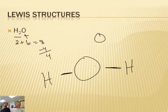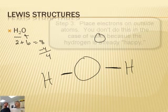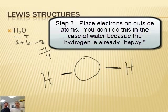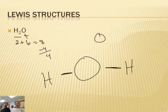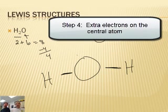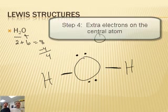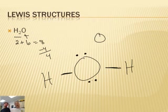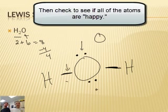Is the hydrogen happy? It is. It only wants two and it has access to two with that bond. A hydrogen is happy. So I have four more to spend, so the rest go on the central atom. I put one, two, three, four, and we distribute them in pairs, always in pairs.